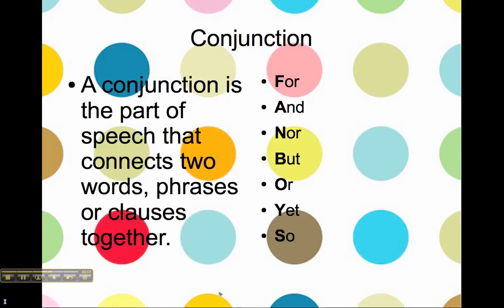And then we have conjunctions. A conjunction is the part of speech that connects two words, phrases, or clauses together. These are the common conjunctions: for, and, nor, but, or, yet, so. The first letter of each word spells out FANBOYS, which is a mnemonic device to help you remember — for, and, nor, but, or, yet, so.